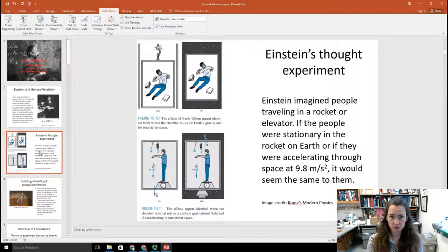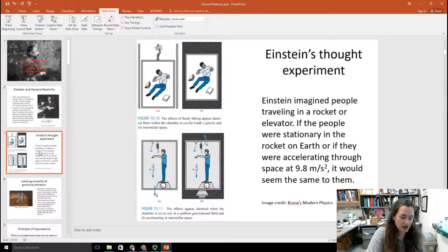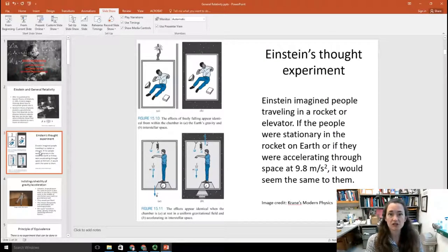If they were on Earth, of course, there would be a pull due to gravity of 9.8 meters per second squared, and they would drop objects, throw objects around, and they would travel in a certain way that we're used to here on Earth. So you wouldn't be able to tell whether you were on Earth or in a rocket ship traveling at 9.8 meters per second squared acceleration upward. It would seem the same to you.